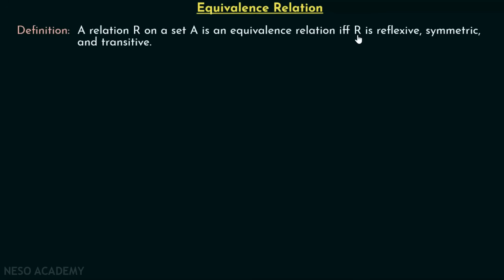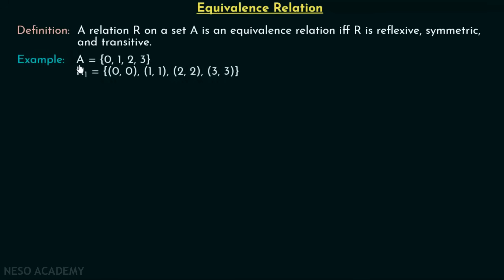Let's see some examples to understand this concept better. We have set A = {0, 1, 2, 3} and relation R1 which consists of the ordered pairs (0,0), (1,1), (2,2), (3,3). These are all the ordered pairs in relation R1.